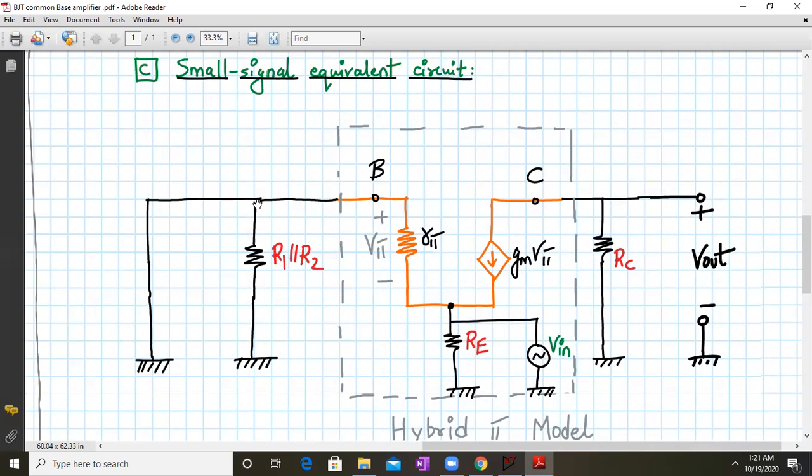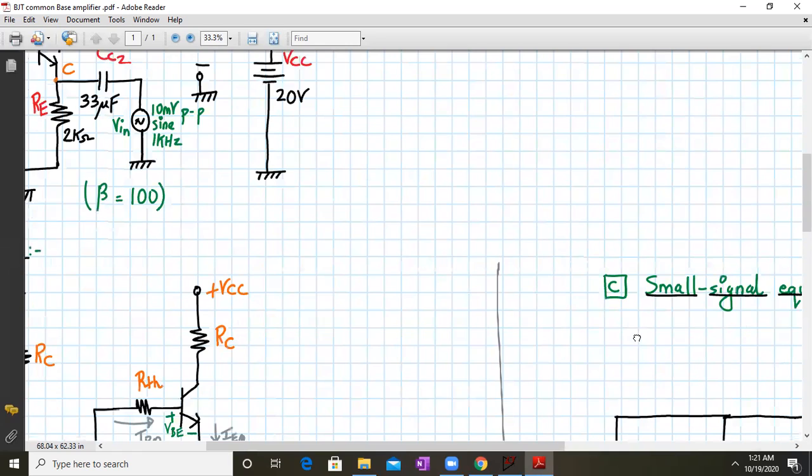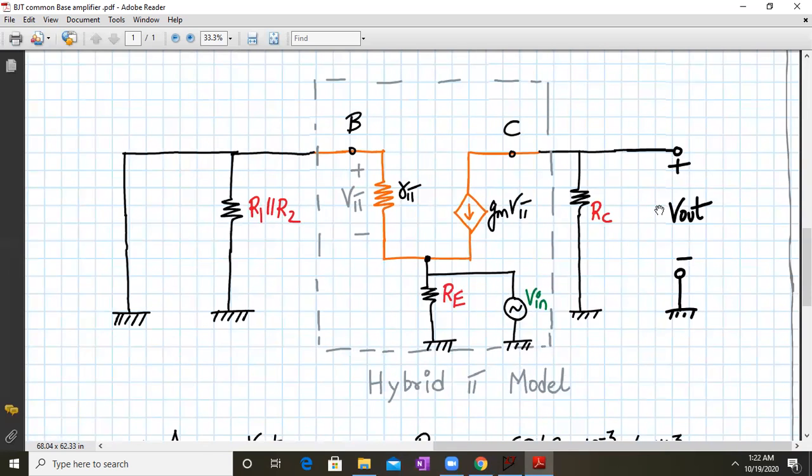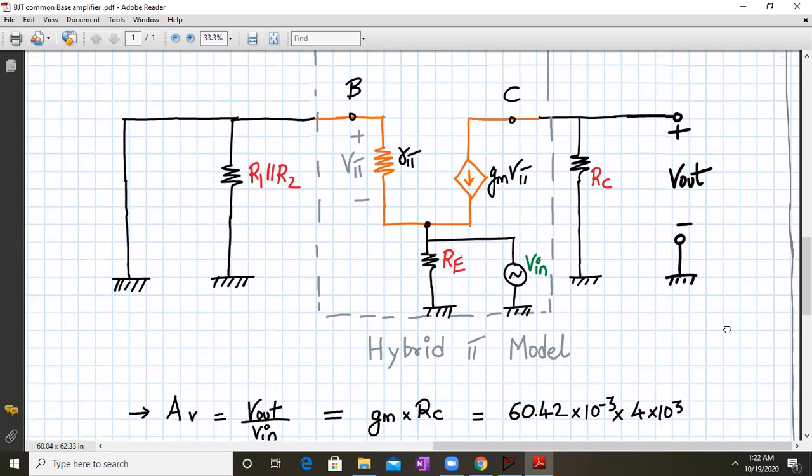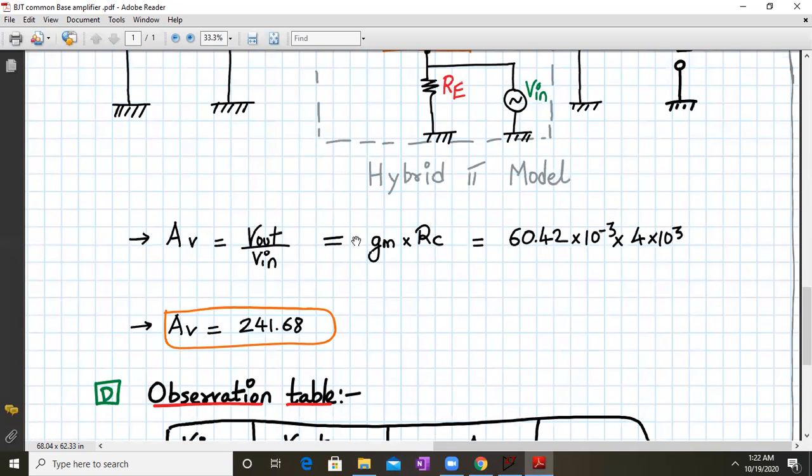The hybrid pi model consists of RPI connected between the base and the emitter and GM into VPI current source connected between the collector and the emitter. At the input side, we have R1 parallel to R2. The CB is short circuited at mid frequencies, so the base terminal is connected to the ground. At the output side, we have RC and input is connected in parallel with RE. AV is given by V out upon V in, which is GM into RC. Substituting, we get 241.68.